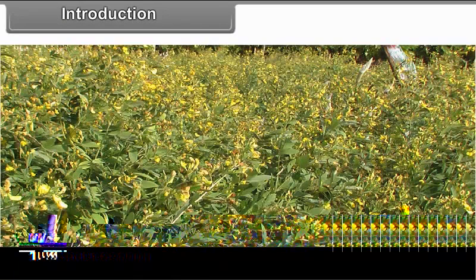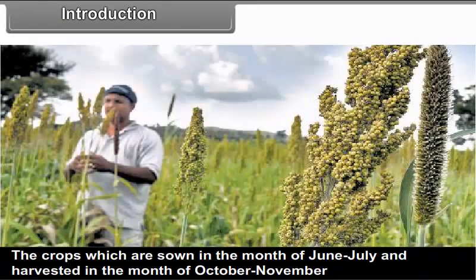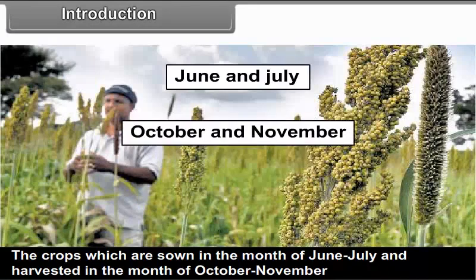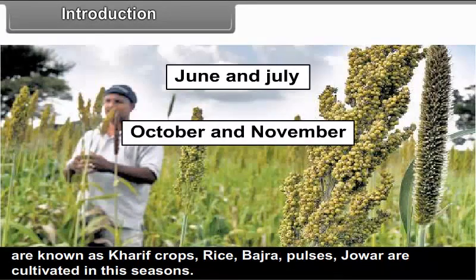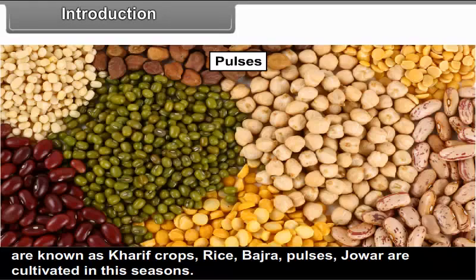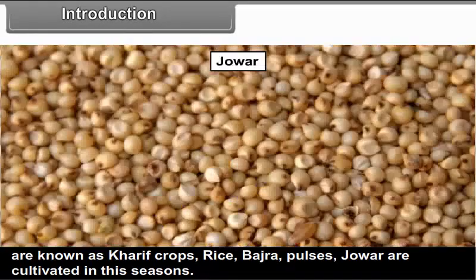Kharif Season: The crops which are sown in the month of June and July and harvested in the month of October or November are known as Kharif crops. Rice, Bajra, Pulses, and Jowar are cultivated in this season.